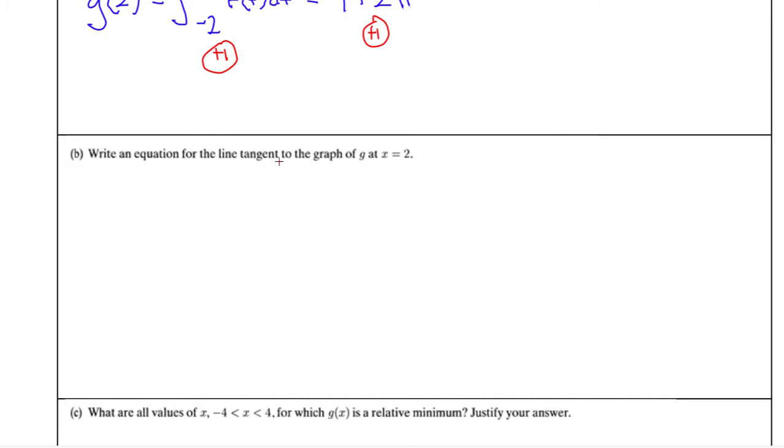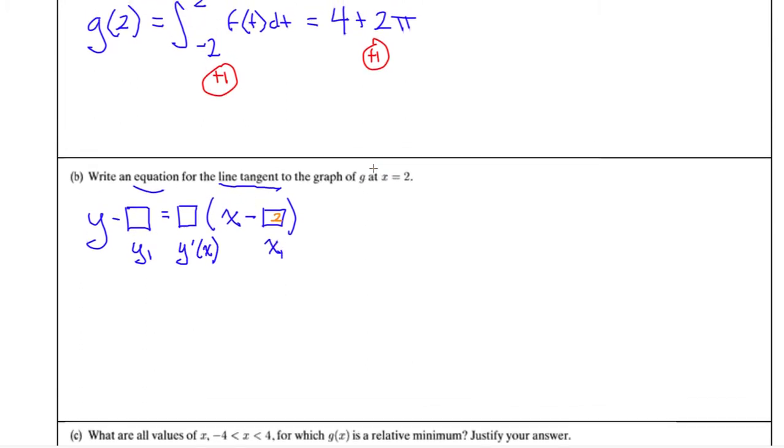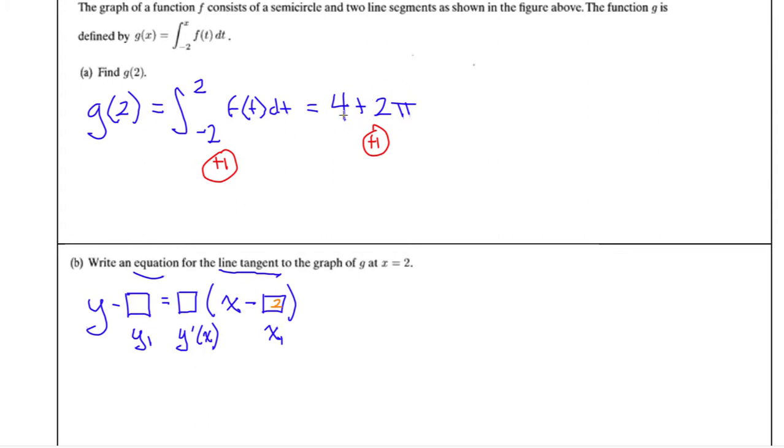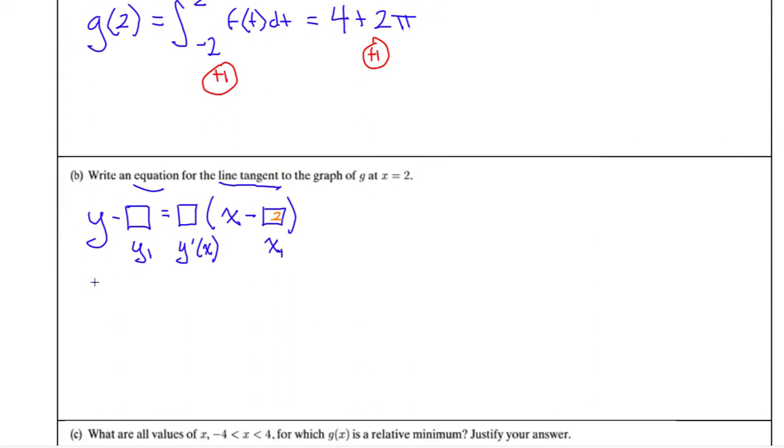For part B, we need an equation for the line tangent. Whenever you see equation, line tangent, those three words, it always tells us we're using y minus the y-coordinate equals slope times x minus the x-coordinate. That's the x-coordinate x1, this is the y1, that's our slope m, or since we're in calculus, it's y-prime of that x-coordinate. We have x equals 2, so 2 goes in here. When I plug in x equals 2, I get 4 plus 2 pi, which is our y-coordinate. So I'm going to have y minus 4 plus 2 pi in parentheses. I need to figure out the slope, so I need to take the derivative.